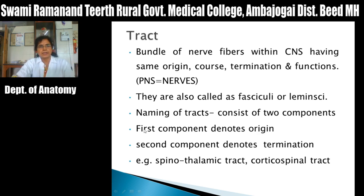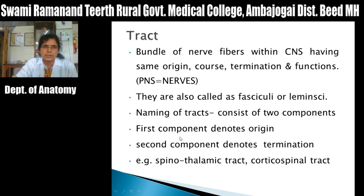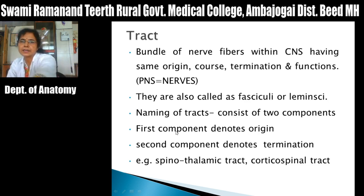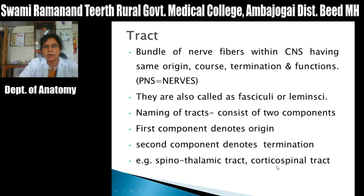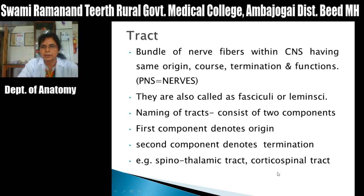Tracts are named based on the structures they connect. The name consists of two components: the first denotes origin and the second denotes termination. For example, the spinothalamic tract — 'spino' means it begins in the spinal cord and 'thalamic' means it ends in the thalamus. Another example is the corticospinal tract — 'cortico' means it starts in the cerebral cortex and it ends in the spinal cord.